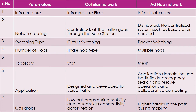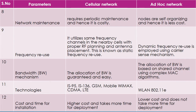Based on call drop: cellular network has less call drop, while ad hoc network has more call drop during mobility. Based on network maintenance: cellular network requires periodic maintenance and is costly, but in ad hoc network nodes are self-organizing and the cost is less.